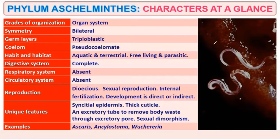The unique features: they have a multi-nucleated epidermis and show a thick cuticle. They have an excretory tube to remove body waste through an excretory pore. They show sexual dimorphism. Examples are Ascaris and Wuchereria.